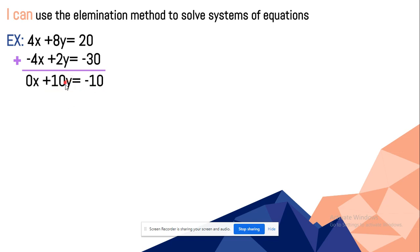Now what we want to do is to leave that variable alone. And by doing that we can divide both sides by 10. So 10 divided by 10 is 1, we don't have to write that. And -10 divided by 10 is -1. So now we know the variable of y which is -1.